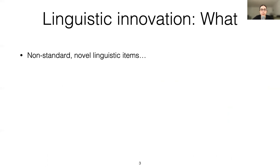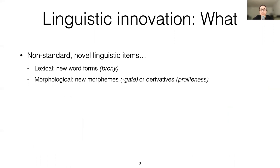What I mean by linguistic innovation here is non-standard and novel linguistic items on different levels. On the lexical level, this would be new words like 'brony'. On the morphological level, it would be new morphemes like the root 'gate' in the meaning of scandal, or their novel combinations. And on the orthographic level, these would be non-standard spellings, like this spelling of the word 'tonight'.